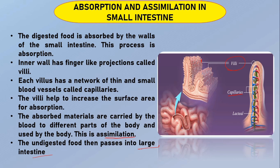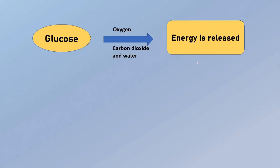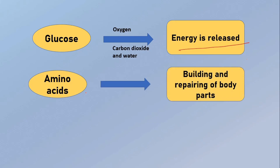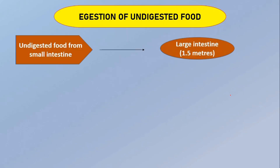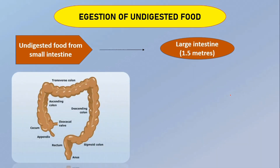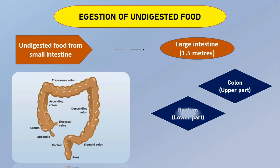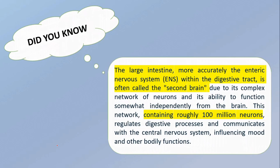In the cells, glucose breaks down with the help of oxygen into carbon dioxide and water, releasing energy. Amino acids are used for building and repairing body parts such as worn-out cells and tissues. Fatty acids and glycerol act as energy reservoirs and are stored under the skin for further use. Undigested and unabsorbed food passes from the small intestine into the large intestine, which is wider and shorter, about 1.5 meters in length. The large intestine has two parts — colon and rectum. The colon absorbs water and some salts from undigested food, making it dry and semi-solid. This is known as faeces, stored in the rectum and passed out of the body through the anus — a process known as egestion.